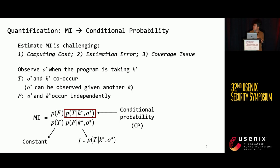Our previous works estimate the mutual information using sampling. Three problems exist in such methods. First, the computing cost is very high — every time you analyze a new secret, you need to redo the sampling. Also, the imprecision of sampling may introduce large estimation errors. Moreover, there are coverage issues when doing sampling.